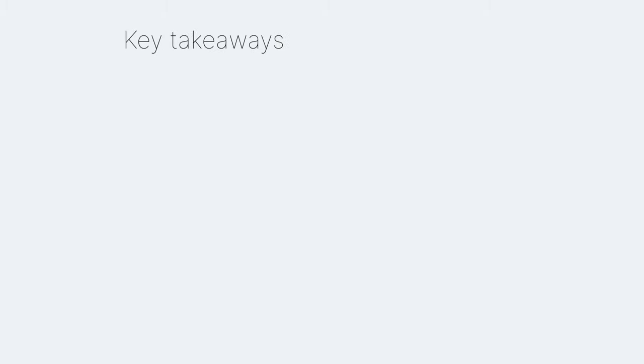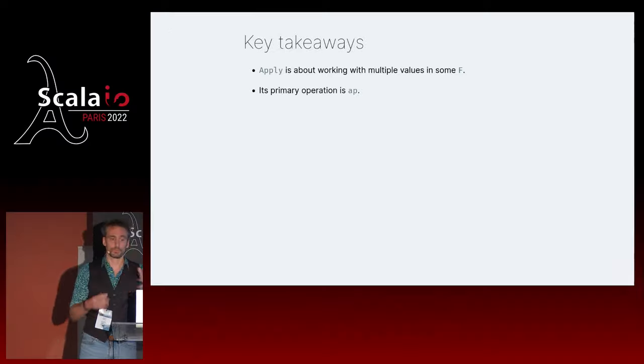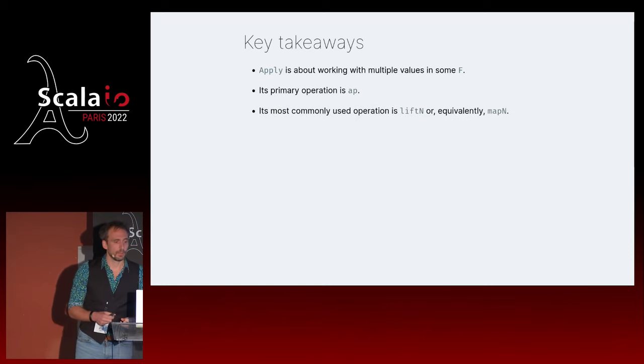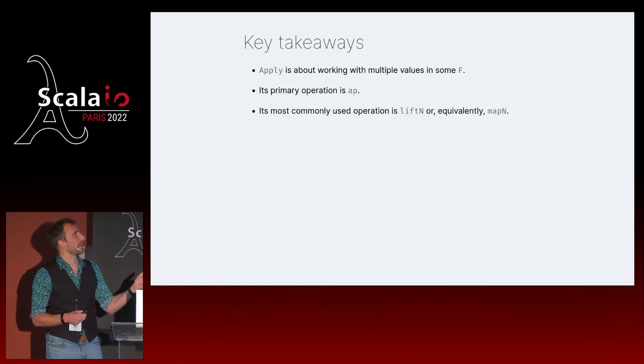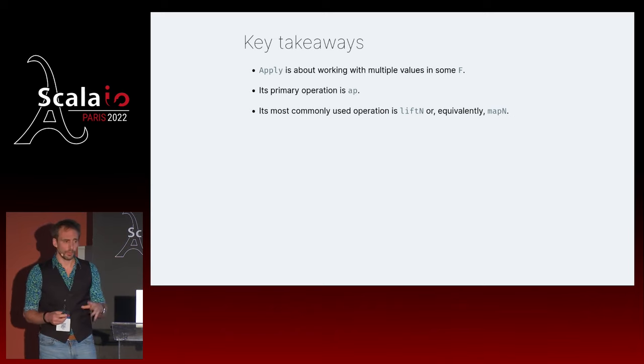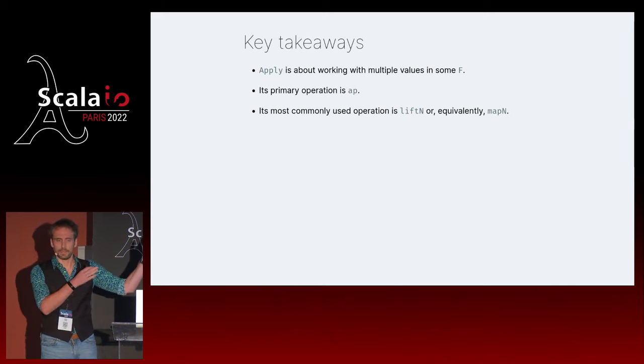Finally the naming: that's not called split - that'd be too easy. It's called apply, which is a bit of an unfortunate name because in Scala, apply is a magic keyword you don't want to use unless you really know what you're doing. So it's actually called ap. But the trait is still called apply. And what have we learned about apply? Apply is about working with multiple values in some F - one or more. Its primary operation is ap, but the function you're most going to use is liftN or equivalently mapN.